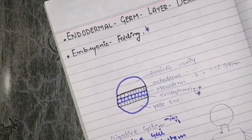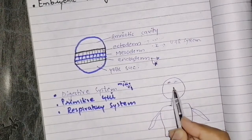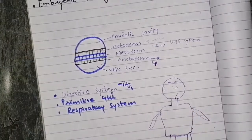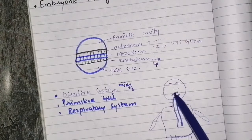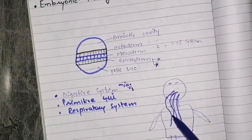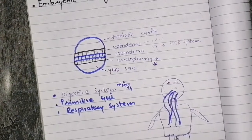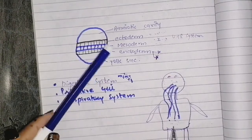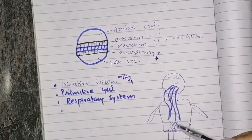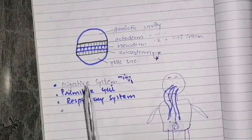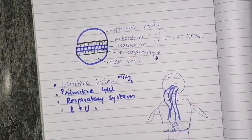Similarly, the respiratory system is also developed from the endoderm — specifically its epithelial lining. And we also know that the urinary system and reproductive system — while those systems are from mesoderm — their epithelial lining is still derived from the endoderm. So the endoderm gives us the lining of the urinary and reproductive systems as well.